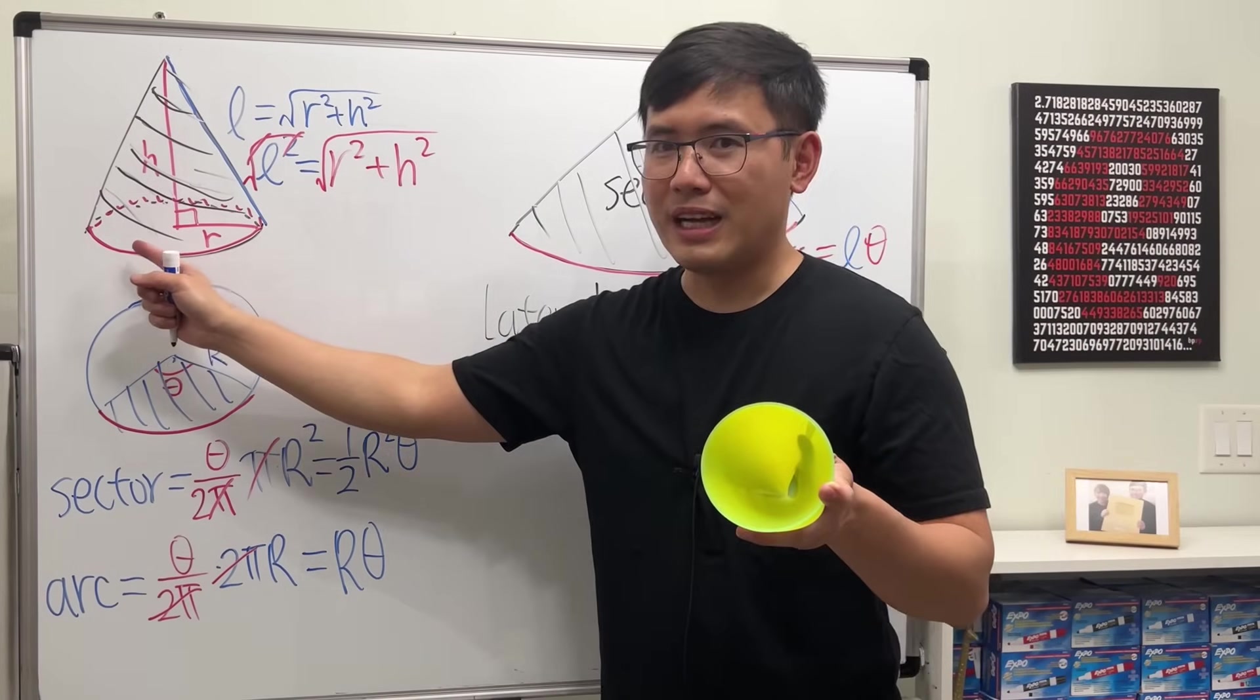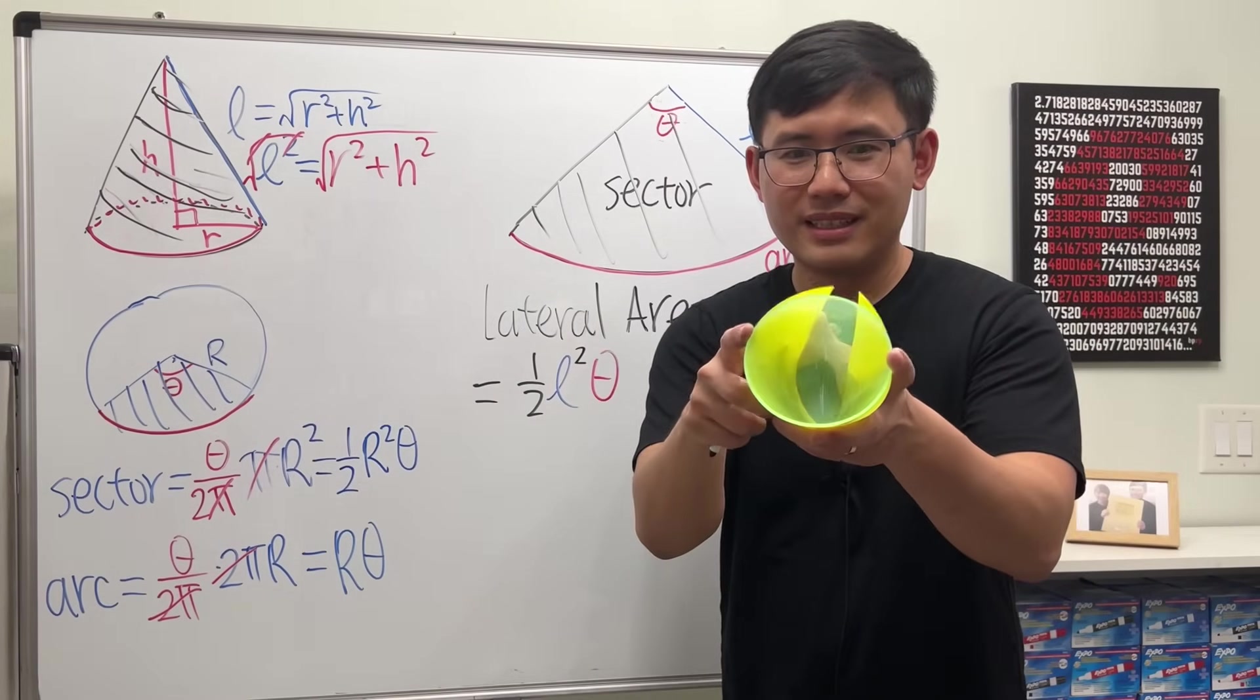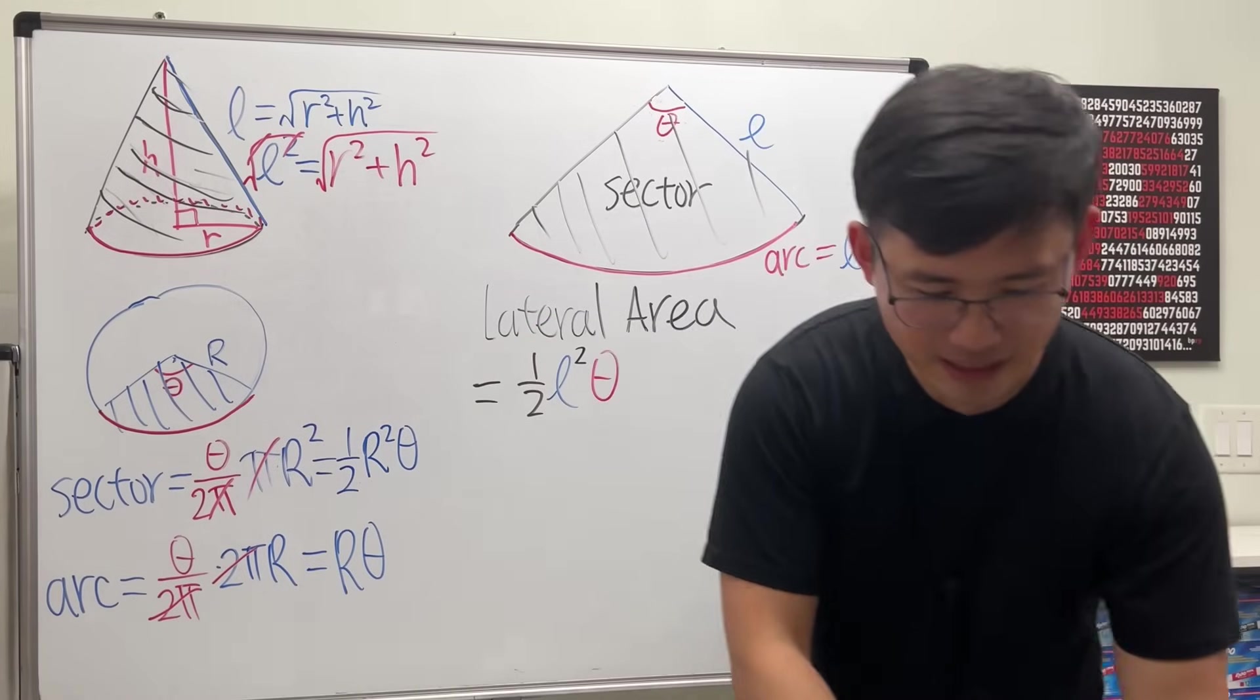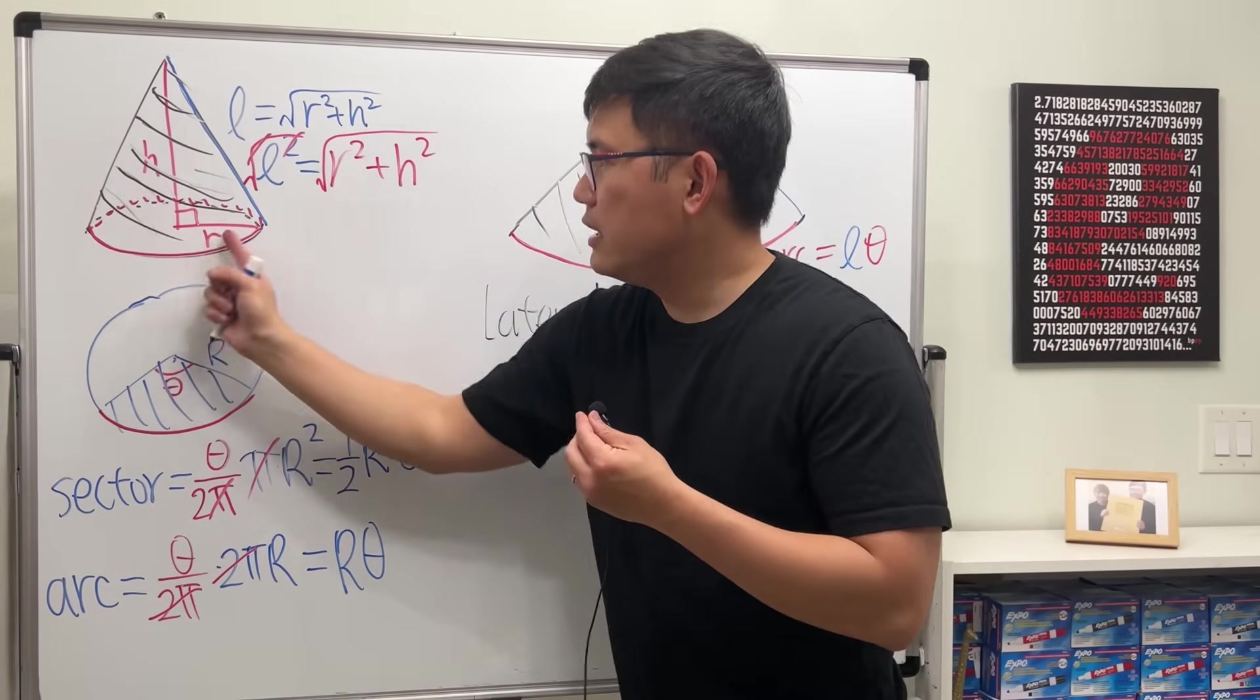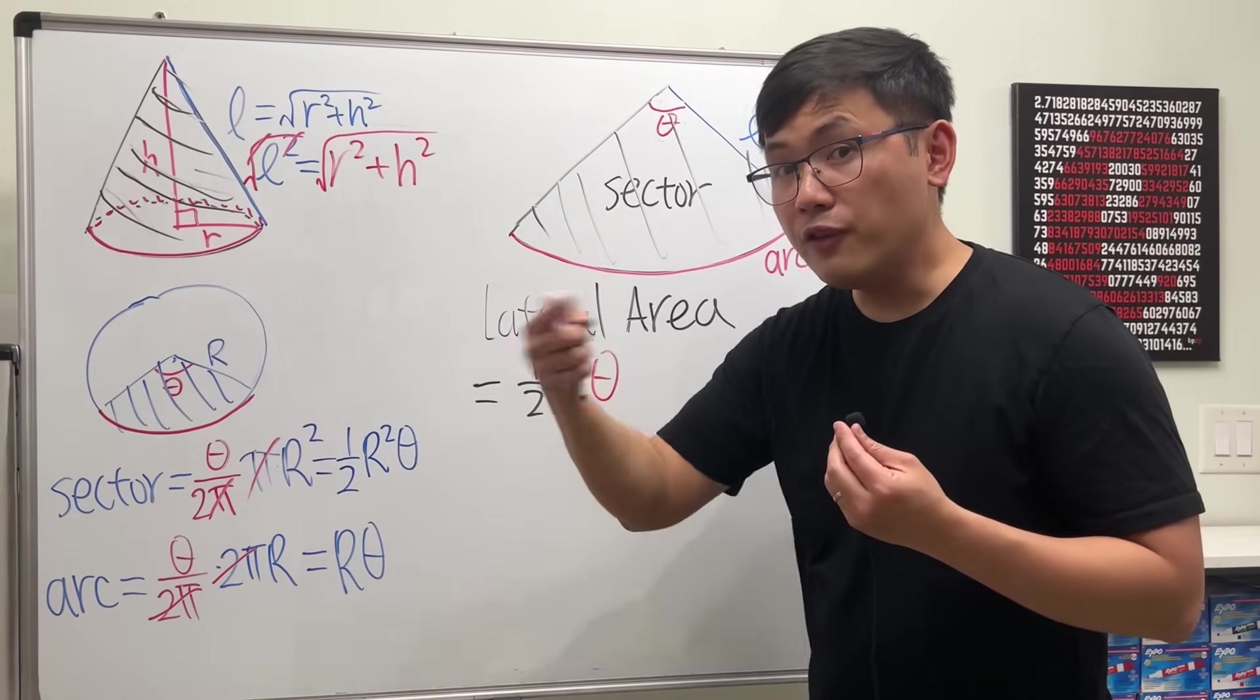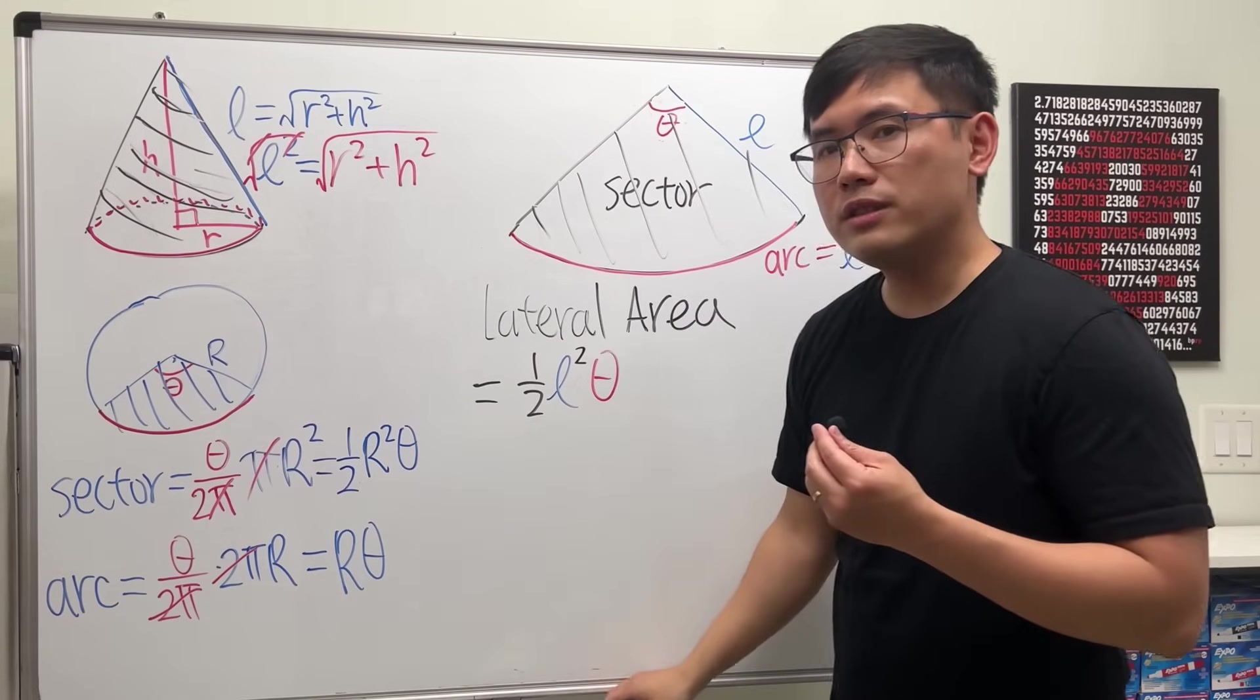This matches with that because it came from there, of course. Like this. Okay? So if you look at this base circle, what's the circumference? This is a whole circle now. What's the circumference?